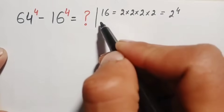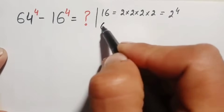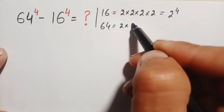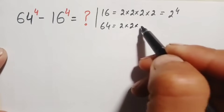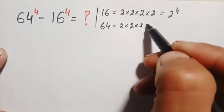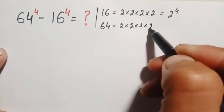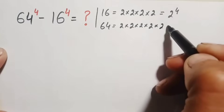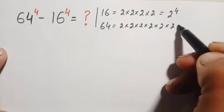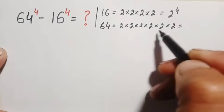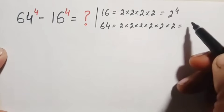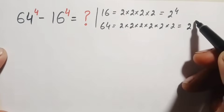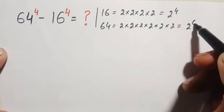We can also write 64 as: 2 × 2 = 4, 4 × 2 = 8, 8 × 2 = 16, 16 × 2 = 32, 32 × 2 = 64. So 2 appears 6 times, meaning we can write 64 as 2 raised to the power 6.